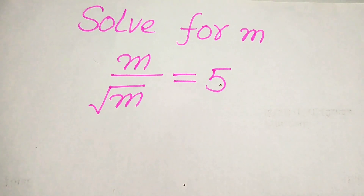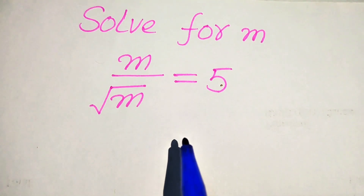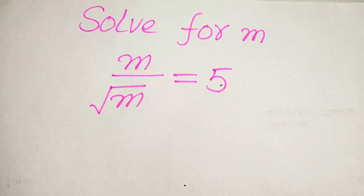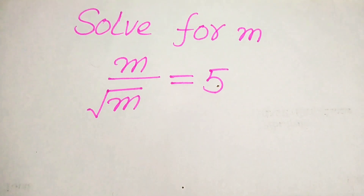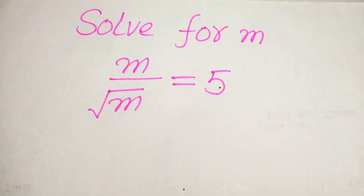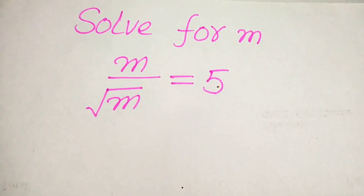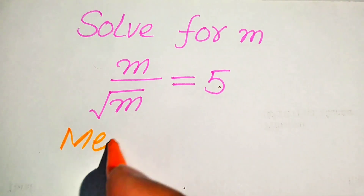Hello everyone. How to solve this problem: for the values of m, if we have m divided by square root of m equals 5. We solve this problem for the values of m, finding all the roots of this equation. At the end, we will check which of the roots are solutions and which are extraneous roots. We solve this problem using two methods.